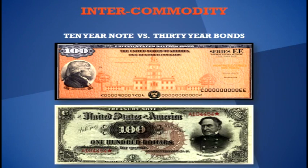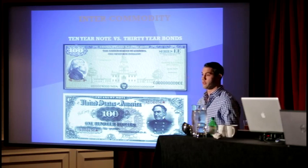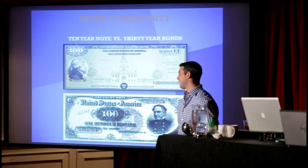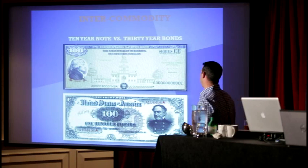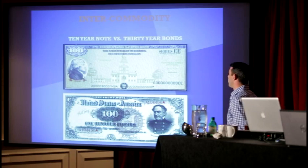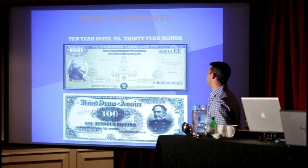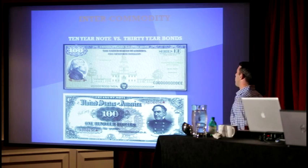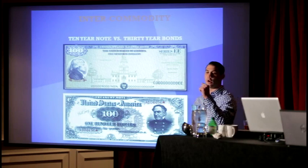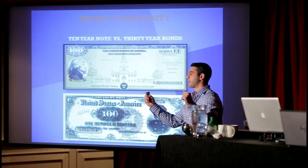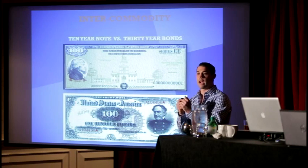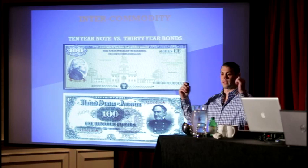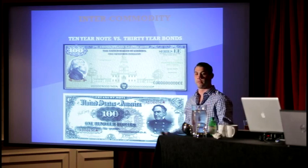The 10-year note versus the 30-year bond — on the trading floor this is known as the NOB spread, so you can actually call your broker and say you want to trade the NOB spread and they should know exactly what you're talking about. This is trading on the yield curve, short term versus longer term. The margin benefit for this spread is 48%. If you had the 10-year note and the 30-year bond in two different accounts, you'd have the full margin requirement, but if you're doing this as a spread in the same account, you only need 48% of the combined totals of the individual margin requirements.